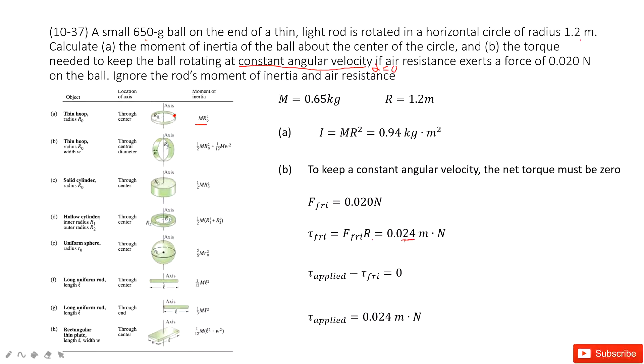And we need to make sure the angular acceleration is zero. So that means the net torque is zero. Agree? So applied torque minus the friction torque equal to zero to satisfy the constant angular velocity. Right?